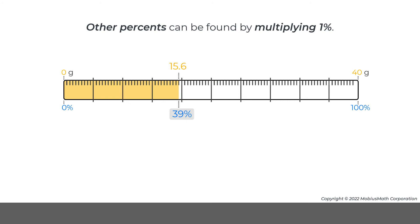So, 39% of 40 grams is 15.6 grams. Note, other ways to represent 39% of 40 grams is 39 hundredths times 40 grams.